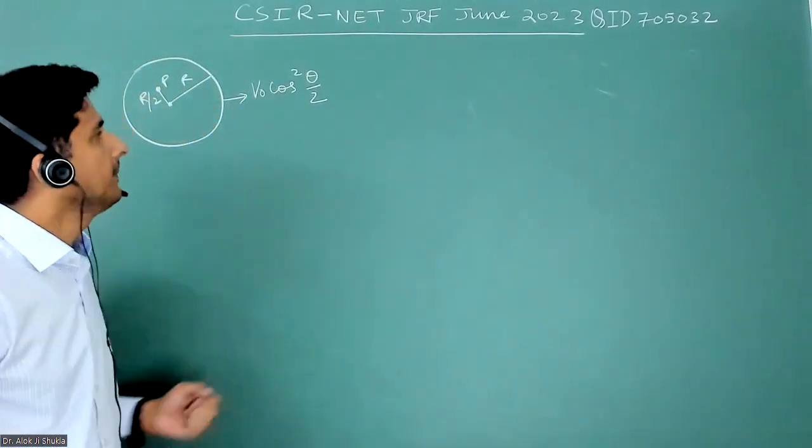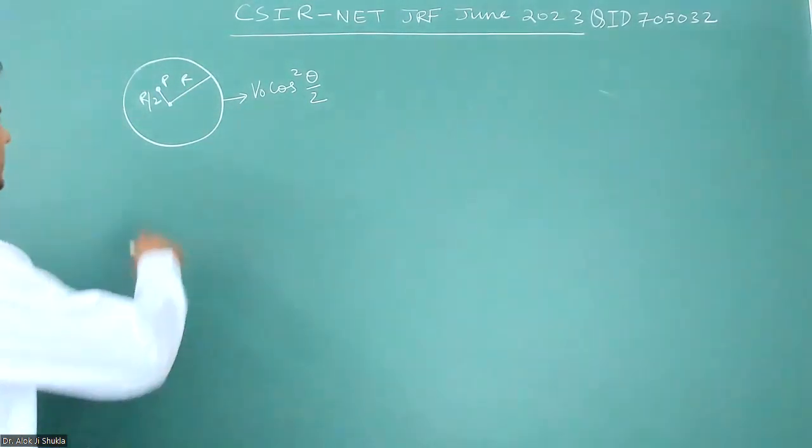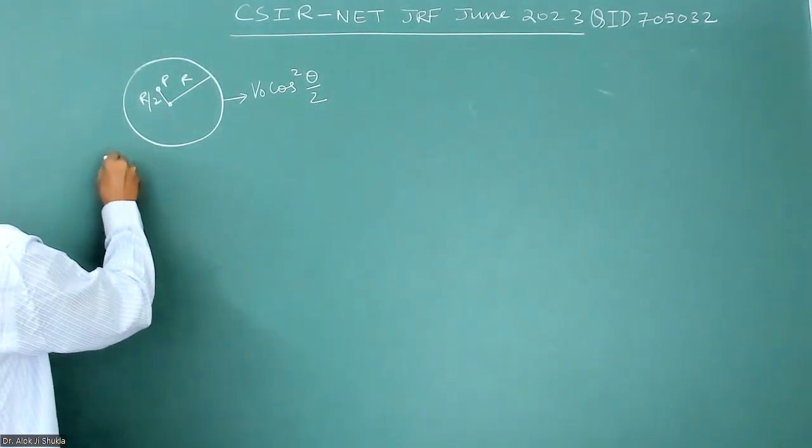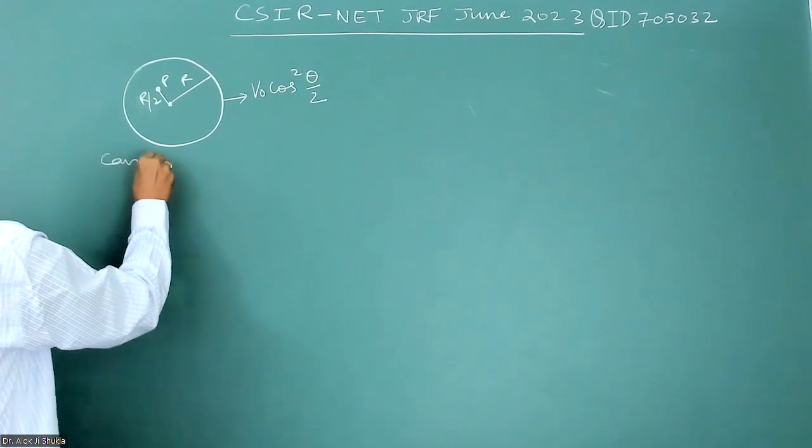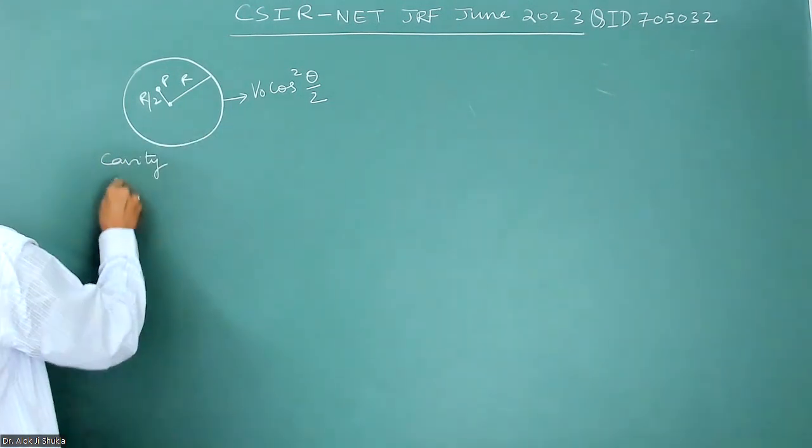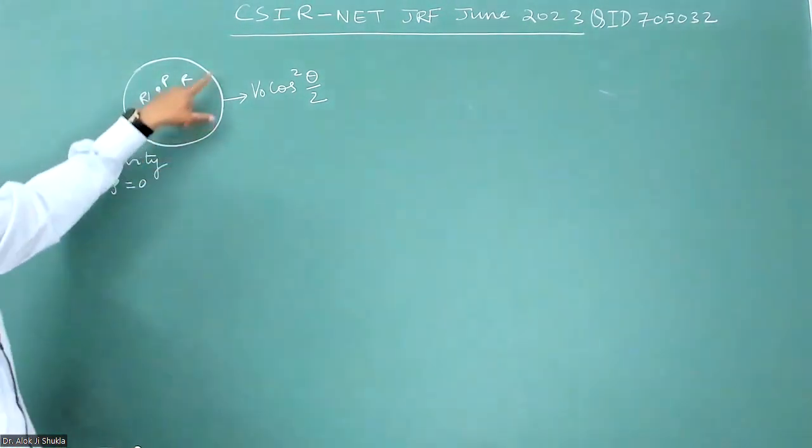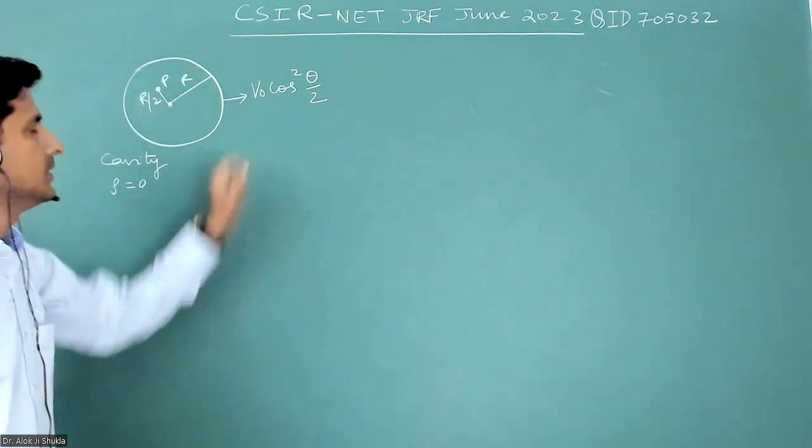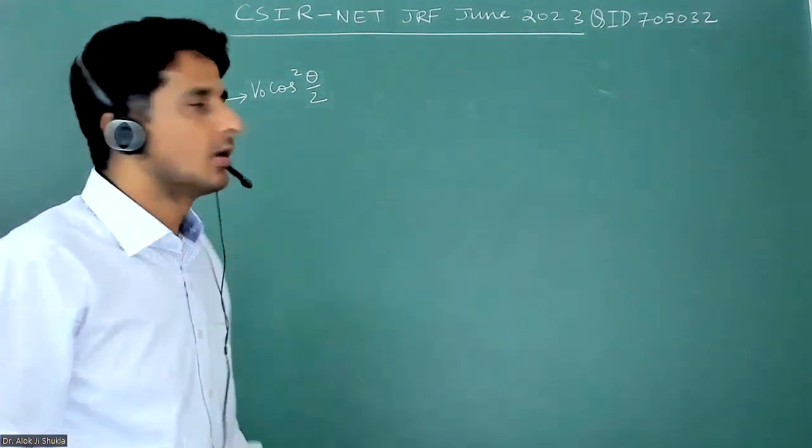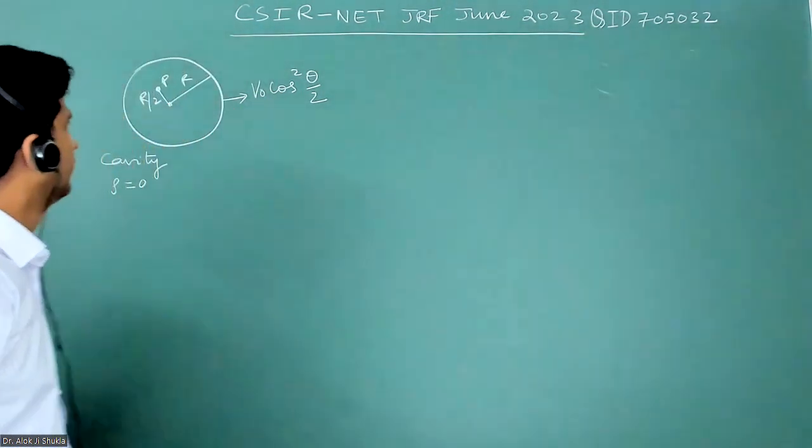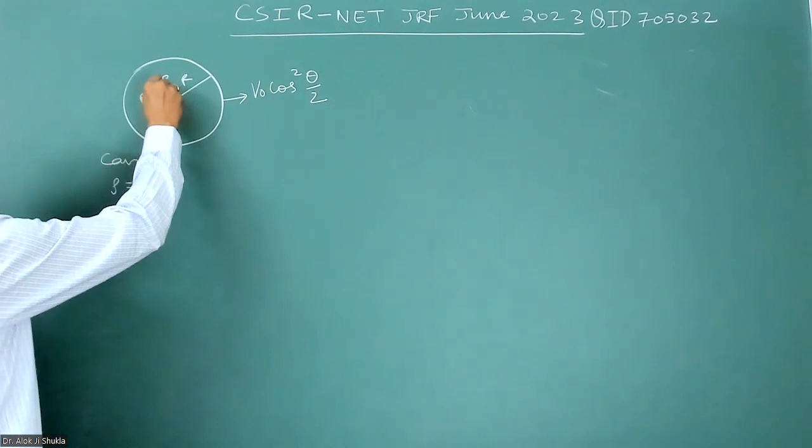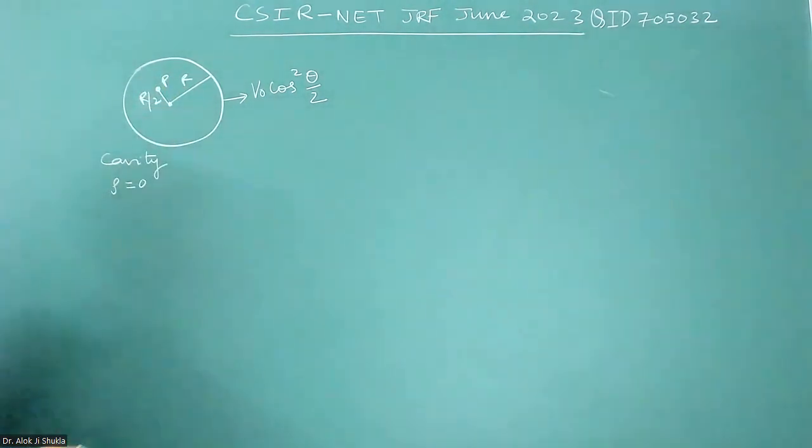A question was asked in this exam: there is a cavity, which is a charge-free region, and at the boundary of this cavity the potential is given to be V₀ cos squared theta by 2. They want the potential here at a distance r by 2.